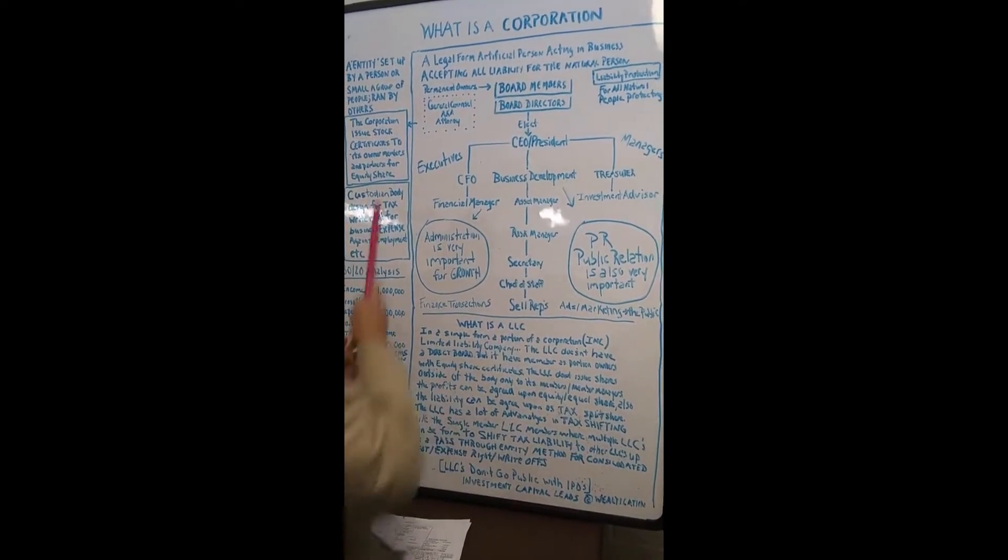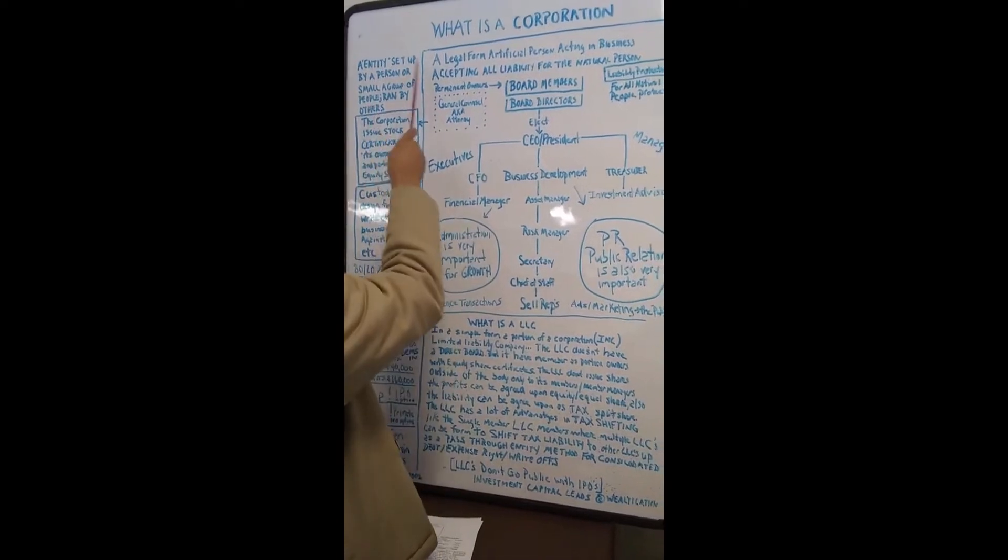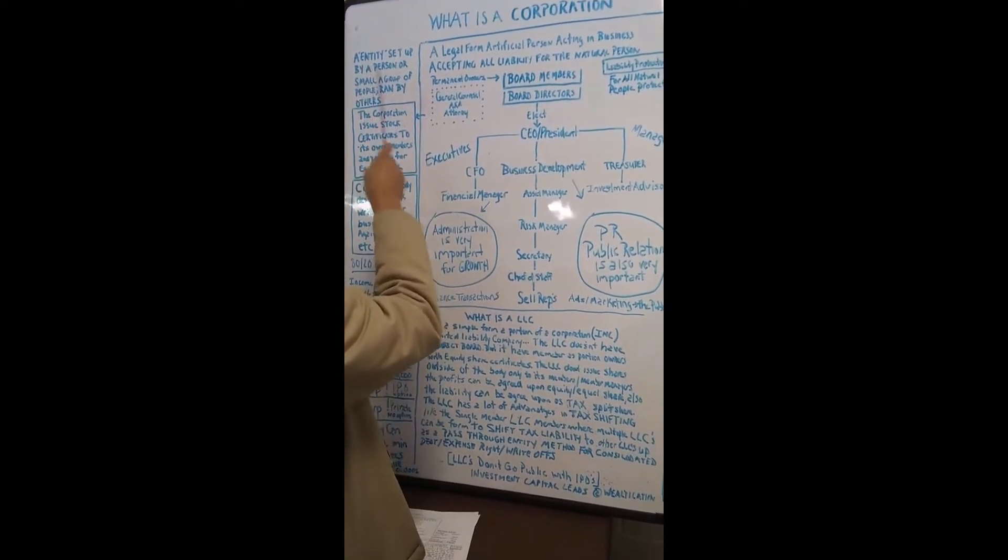How did it get existed? An entity set up by a person, a small group of people, and ran by others.